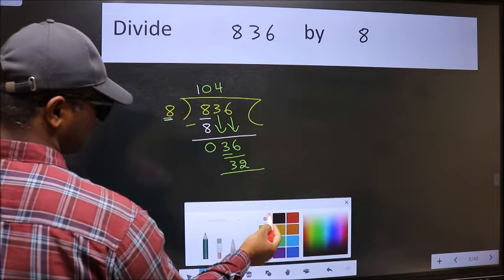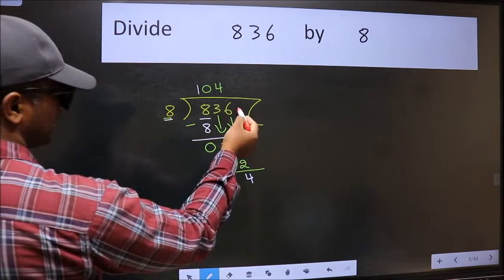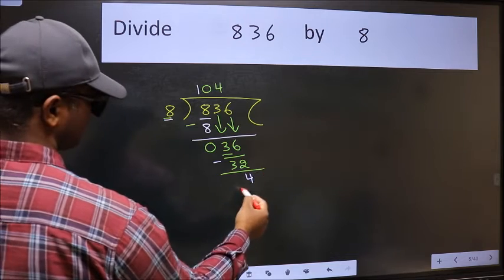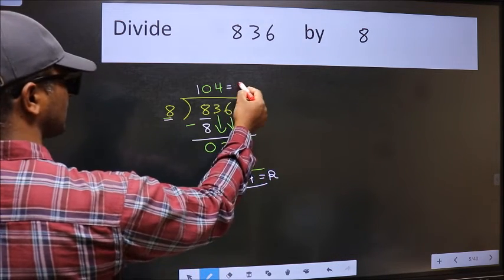Now we should subtract. We get 4. No more numbers to bring it down. So we stop here. This is our remainder and this is our quotient.